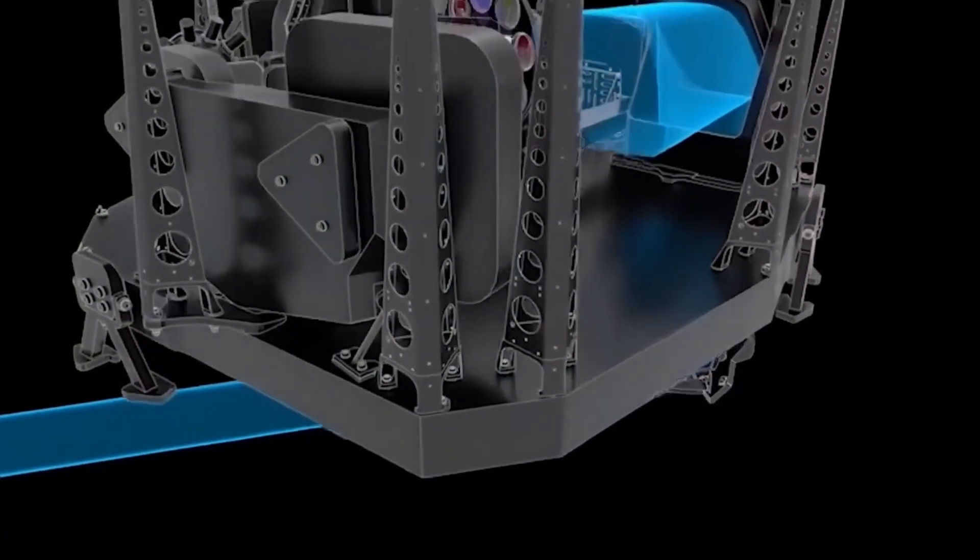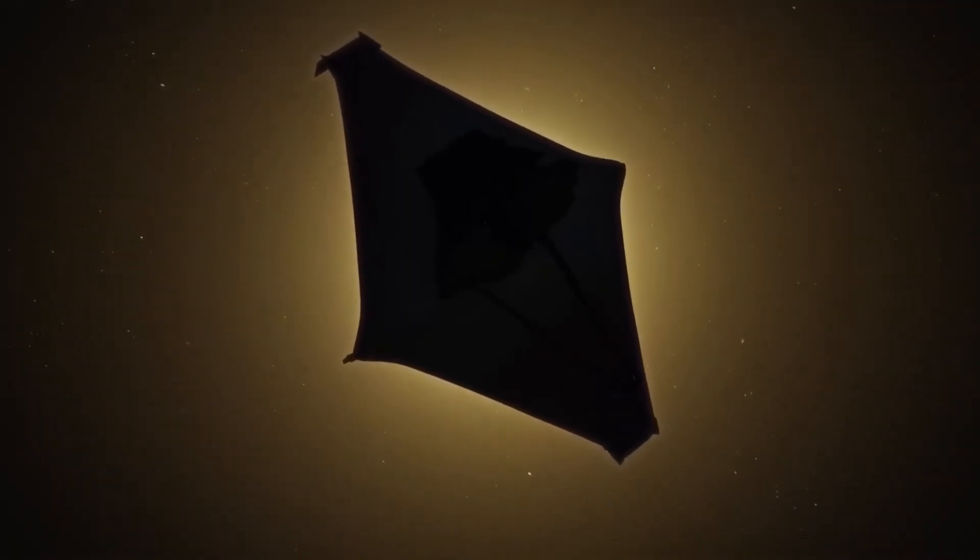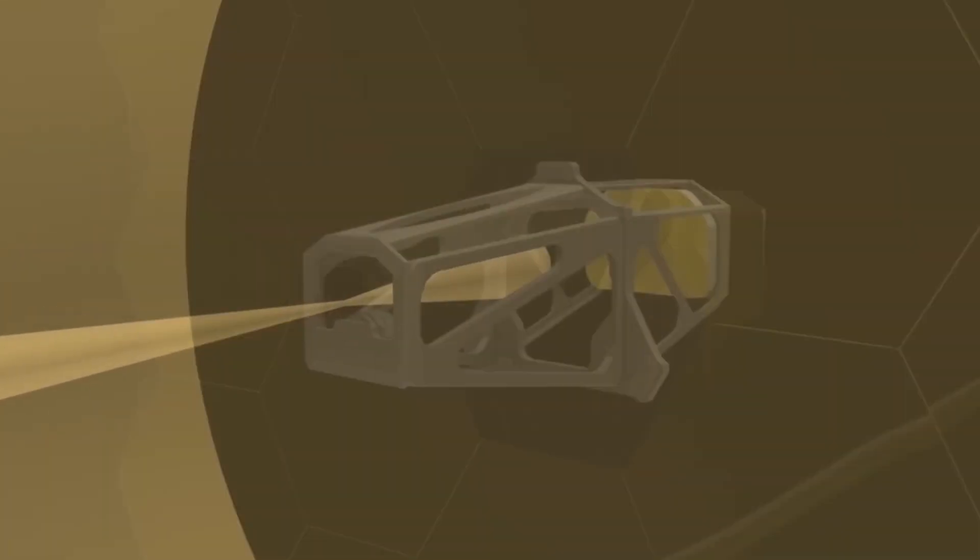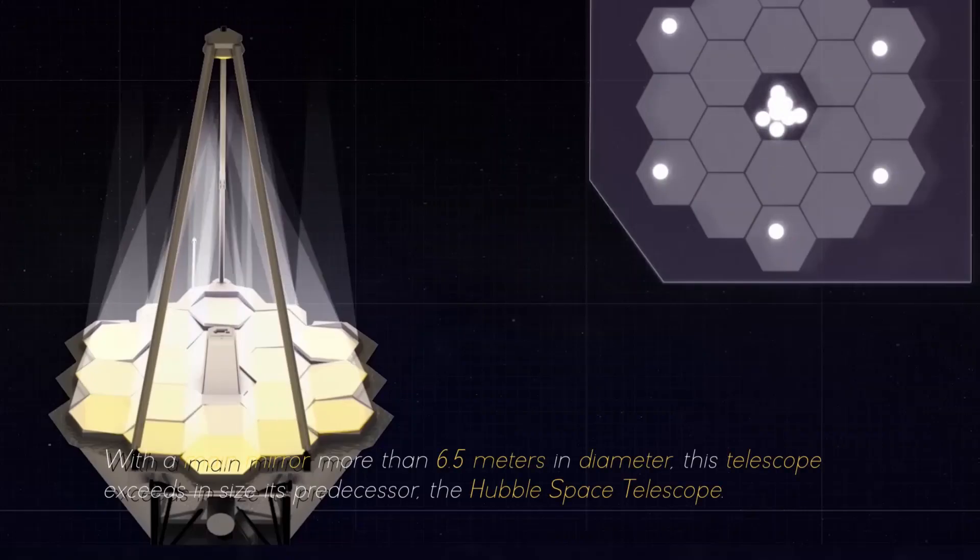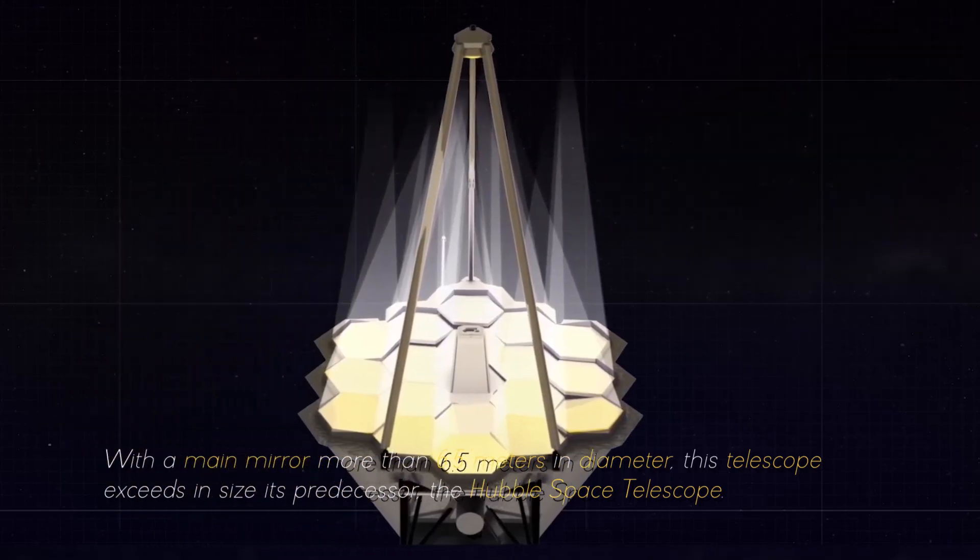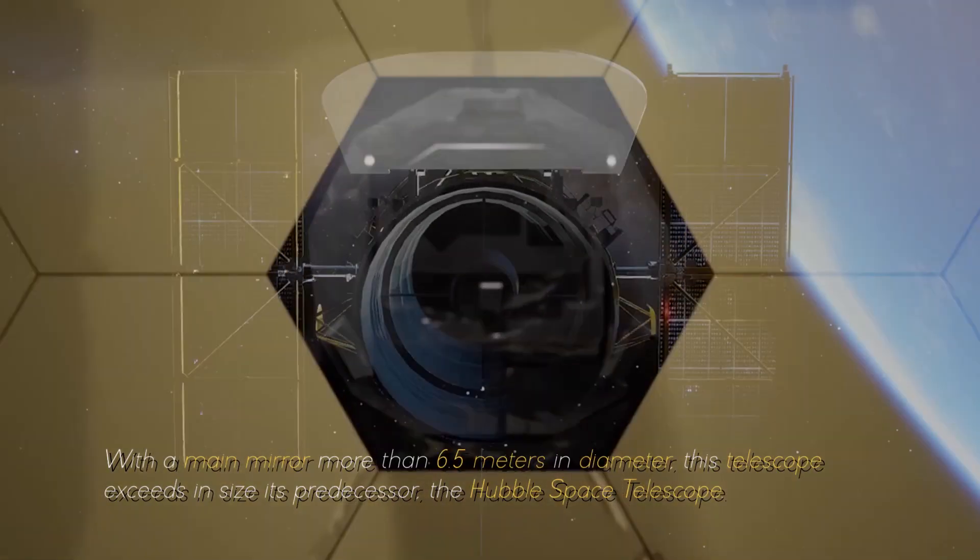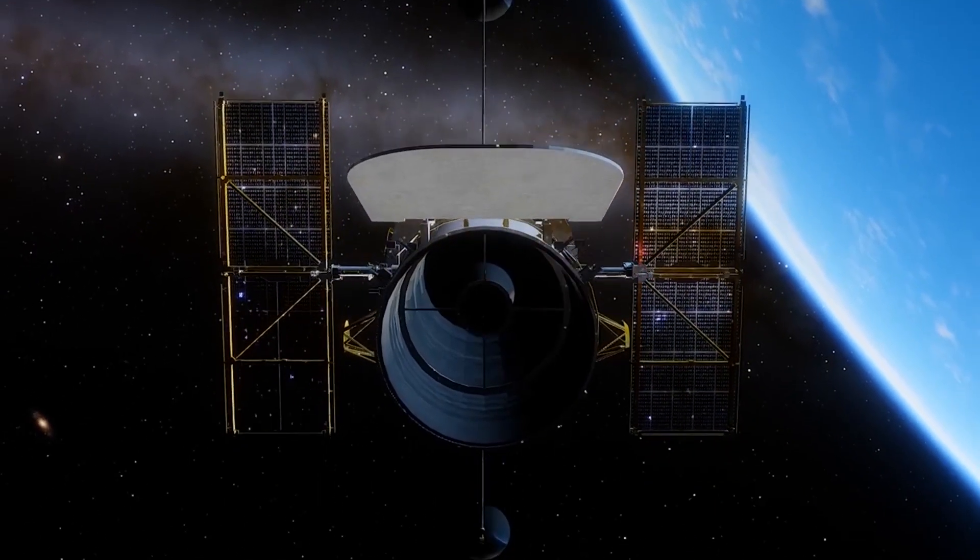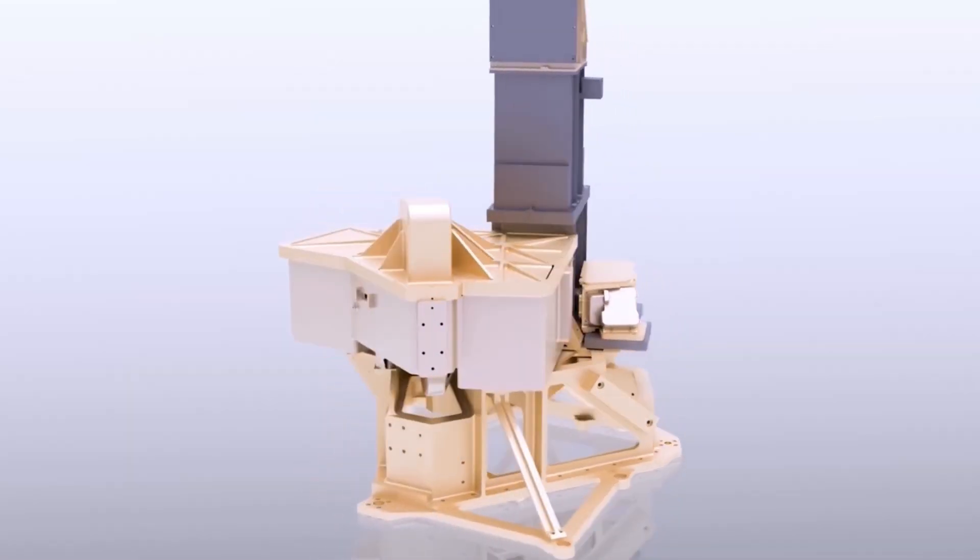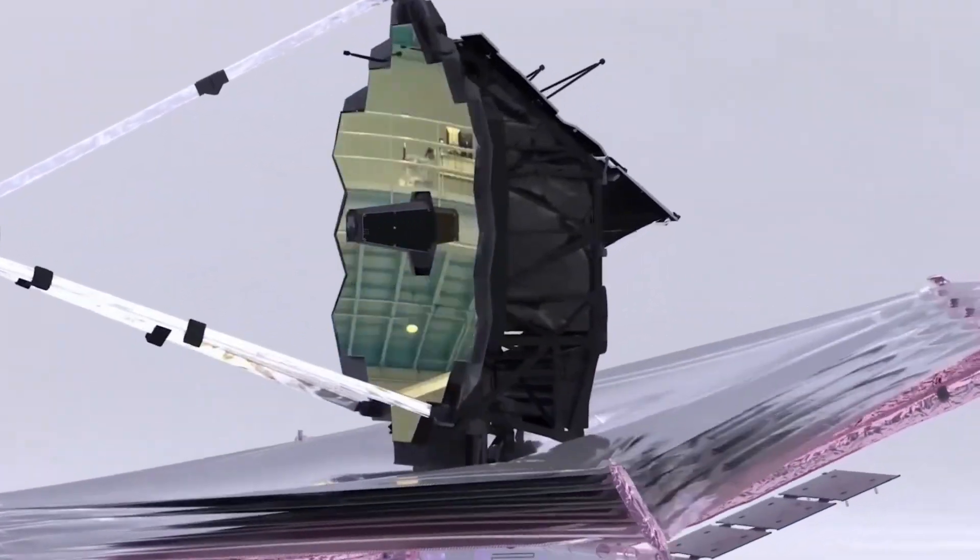The James Webb Space Telescope is equipped with an array of advanced scientific instruments carefully designed to observe the universe at an unprecedented range of wavelengths. With a main mirror more than 6.5 meters in diameter, this telescope exceeds its predecessor, the Hubble Space Telescope.